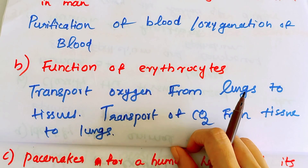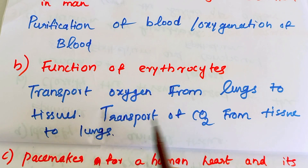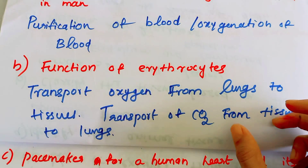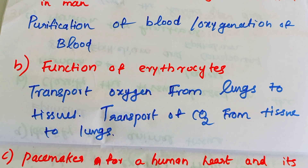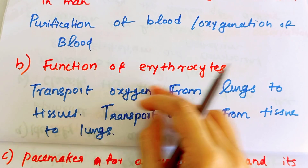The functions of erythrocytes: they transport oxygen from the lungs to tissues, and transport carbon dioxide from tissues back to the lungs. Erythrocytes are responsible for this two-way gas transport in the body.